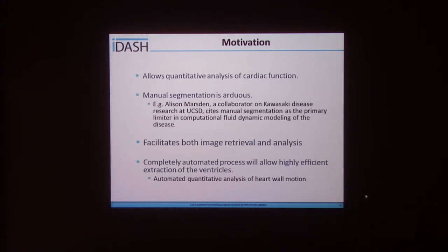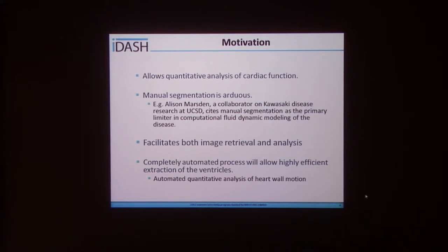By having an active shape model of the heart, it will allow us to quantify cardiac function. Manual segmentation is arduous. For example, Allison Marston, a collaborator in Kawasaki disease research at UCSD, cites manual segmentation as the primary limiter in computational fluid dynamic modeling of the disease. This model will facilitate both image retrieval and analysis, allowing highly efficient extraction of ventricles and automated quantitative analysis of heart wall motion.